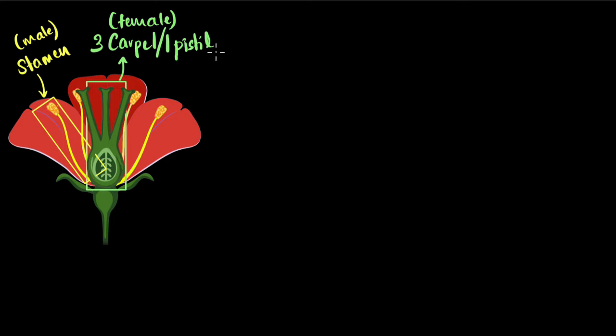So you can think of pistil as a team of carpals. Here I have one team of three carpals but it's also possible for us to have the three carpals which are separate which are not fused together. In this case we will say three carpal three pistil. But we don't have to worry too much because we'll not deal with such complicated flowers.